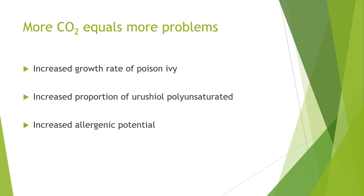Here's an interesting slide: the more CO2 there is in the atmosphere, the more problems poison ivy causes. This is because of an increased growth rate of poison ivy, but there's also an increased proportion of urushiol that is polyunsaturated. A higher proportion of polyunsaturated urushiol in a plant means that plant is more allergenic.